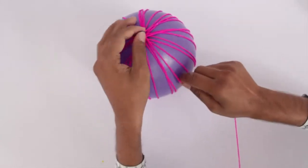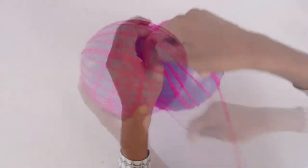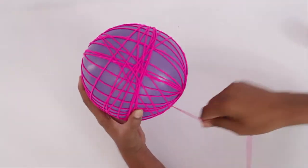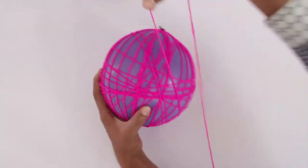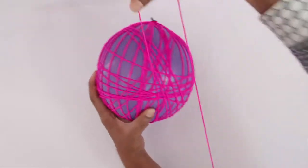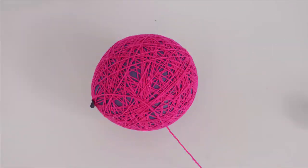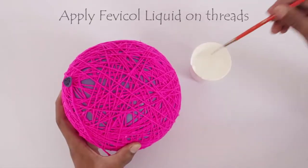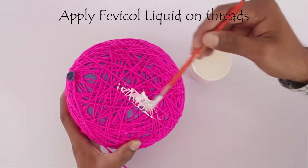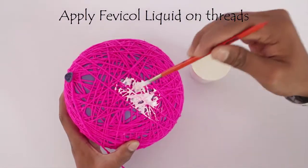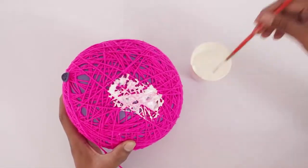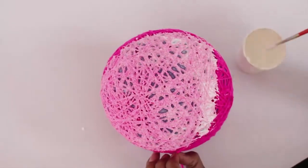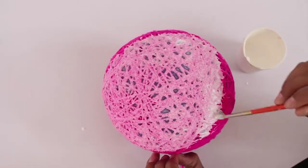Now once the thread is all over the balloon, then paint the thread or the wool with thin glue or a kind of liquid Fevicol. Fevicol is an Indian glue. The thread must absorb the glue.